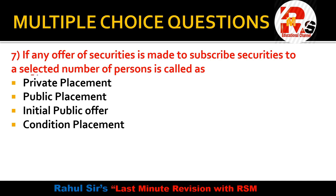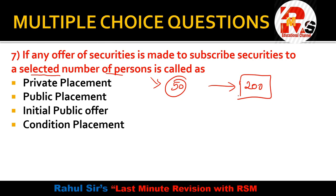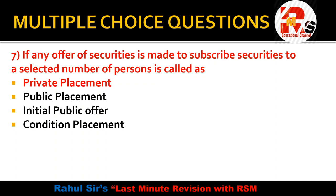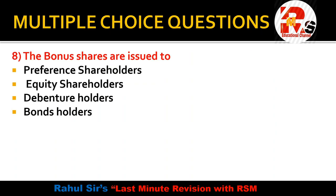Question number 7: If any offer of securities is made to subscribe to securities to a selected number of persons — at least 1 and a maximum of 200 in a financial year — then this is called what? Options are: private placement, public placement, initial public offer (IPO), or conditional placement. Since securities are offered to a specifically selected group of persons, the right answer is private placement.